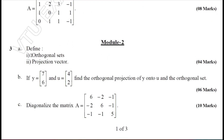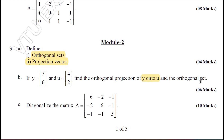Moving on to Module 2. Question 3A is on orthogonal sets and projection vector — you should define these two definitions for four marks. Given two vectors, you are required to find the projection of y onto U and the orthogonal set. Both problems I have solved in the previous video. You can refer that previous video and solve similarly.